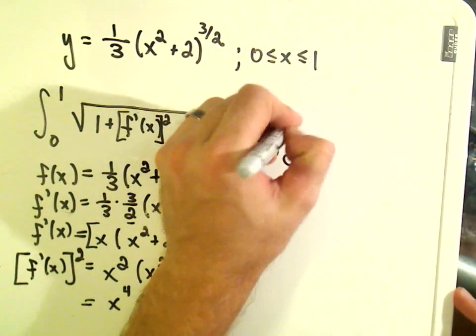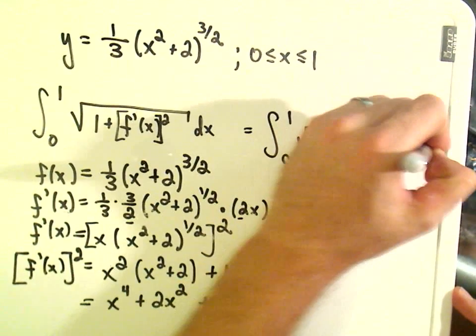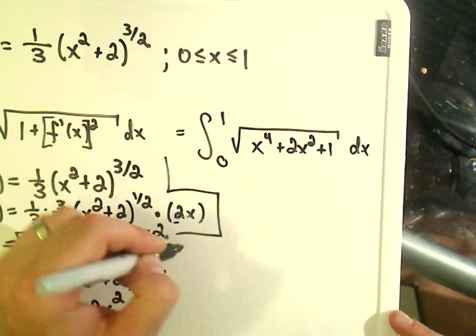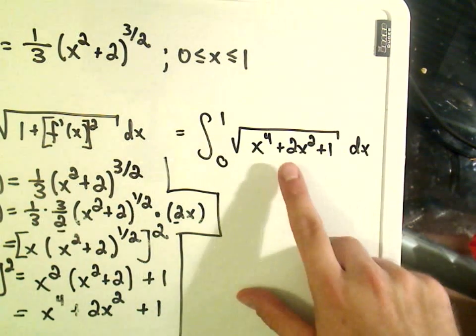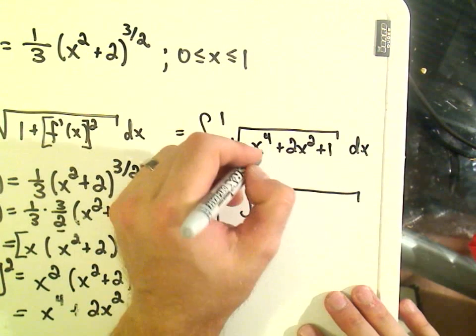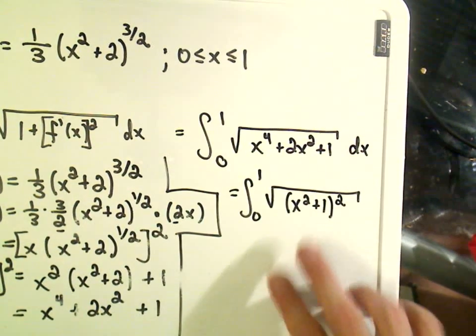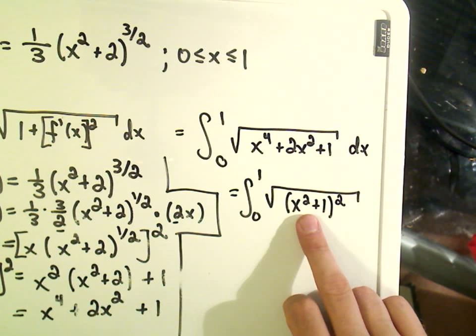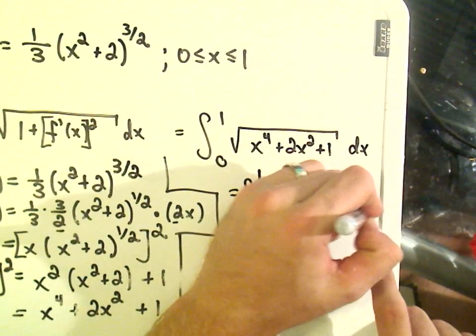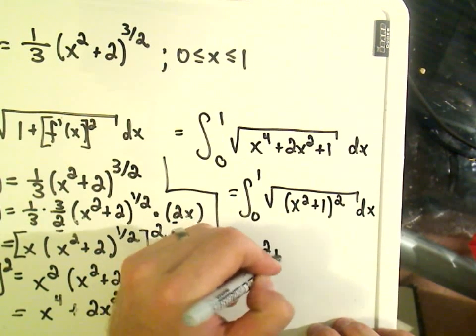Basically this is now what goes underneath the square root. We'll get from 0 to 1 of the square root of x to the fourth plus 2x squared plus 1 dx. This is the trick. Most of these arc length problems, at least the ones I've run into, a lot of times the goal is to write this stuff underneath the square root as something squared. If you think about it, we can write x to the fourth plus 2x squared as x squared plus 1 quantity squared.